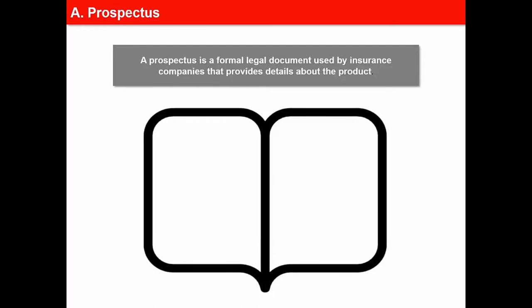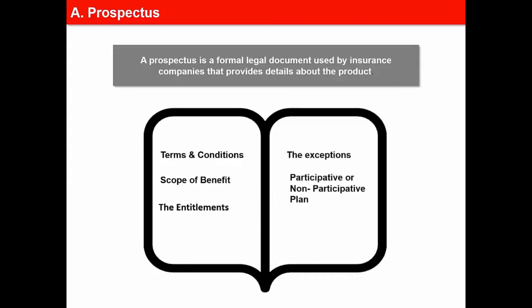The prospectus used by a life insurance company should state the following: the terms and conditions, scope of benefits — guaranteed and non-guaranteed — the entitlements and the exceptions, and whether the plan is participative or non-participative.